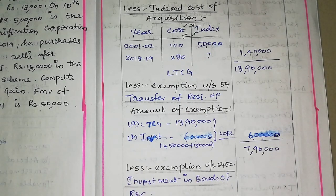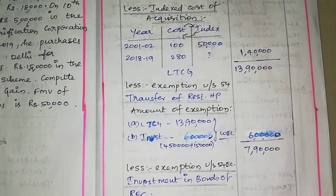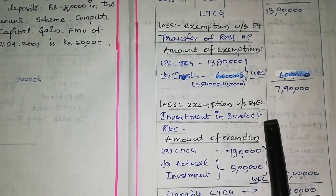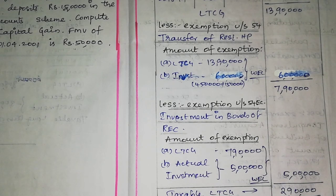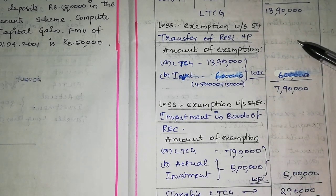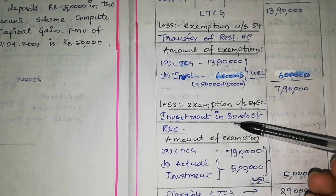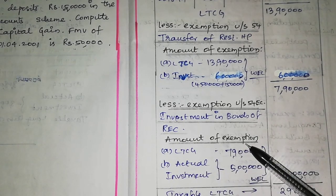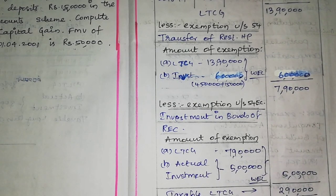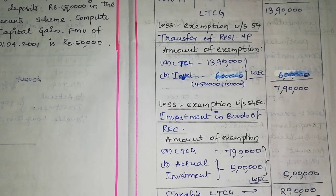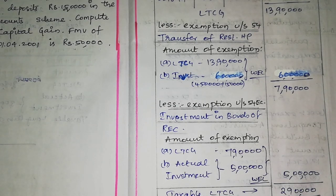So Rs. 6,00,000 is the first exemption under Section 54. Next, the second exemption is for investing in Rural Electrification Corporation bonds under Section 54EC. Long term capital gain is Rs. 7,90,000. Actual investment in REC bonds is Rs. 5,00,000. Whichever is least is Rs. 5,00,000 exemption. So whenever we have year of purchase, year of sale, and the type of asset, we can determine long term or short term capital asset.